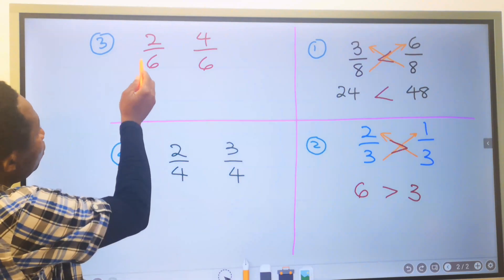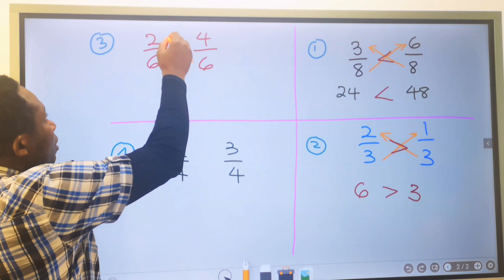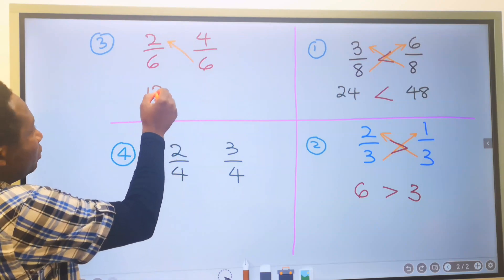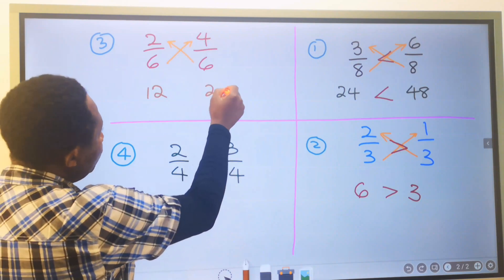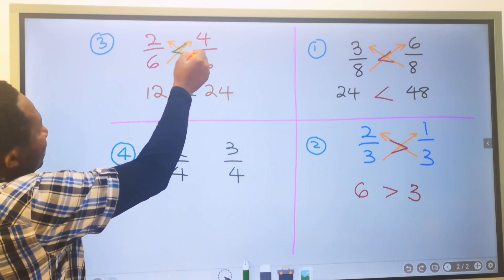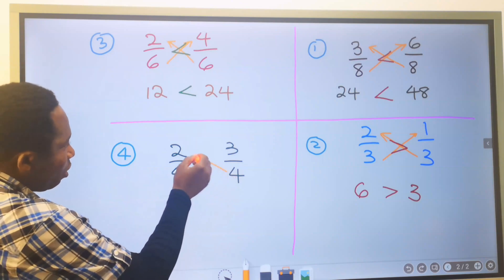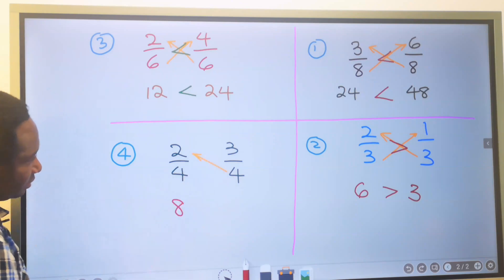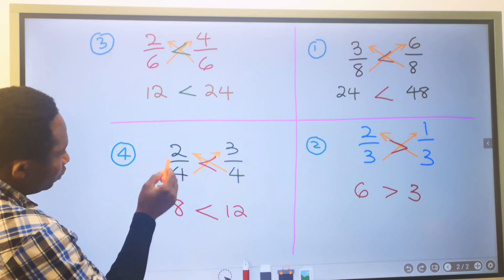Next, two over six and four over six — which is greater? Six multiplied by two gives you 12, and six multiplied by four gives you 24. 24 is greater than 12, so four over six is greater than two over six. For the next example, four multiplied by two gives eight, and four multiplied by three gives 12. 12 is greater than eight, so three over four is greater than two over four. This is how we show which fraction is greater than the other.